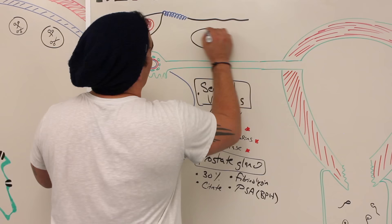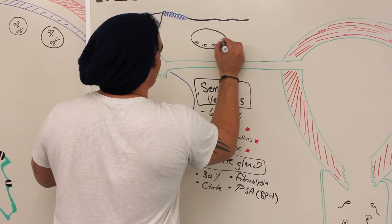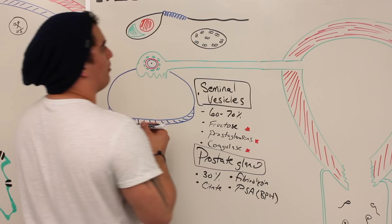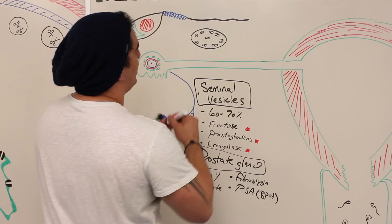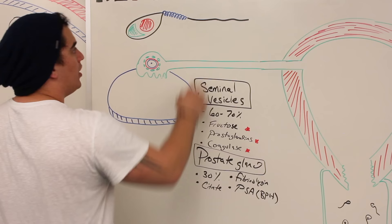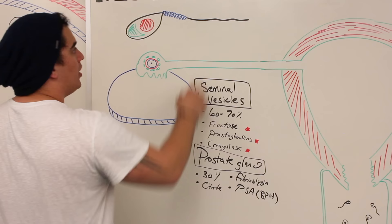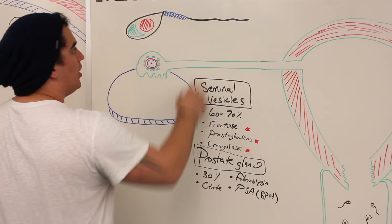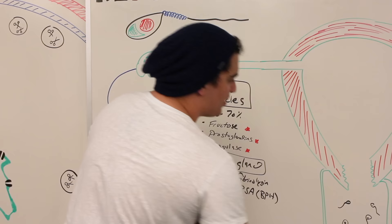If I zoom in on the structure of flagella, it forms what's called a 9-plus-2 arrangement — microtubules arranged in pairs of 9 with 2 in the middle. A lot of proteins in between, including dyneins and other motor proteins, are important in helping to move the flagella. There's a basal body at the end which is a 9-plus-0 in its triplet form. The tail is responsible for locomotive movement, and the mitochondria take nutrient sources and make ATP to power the flagella.